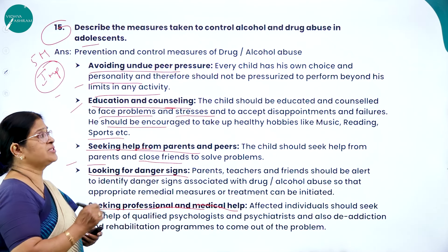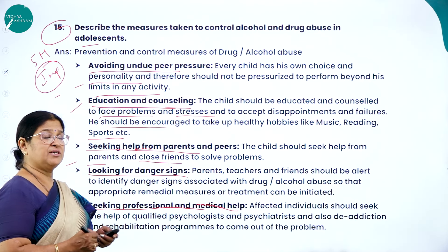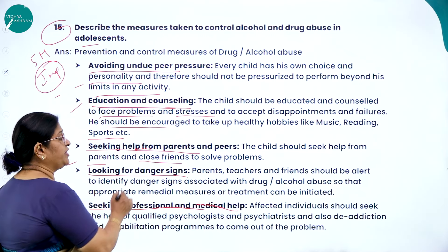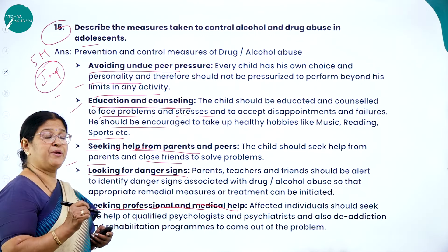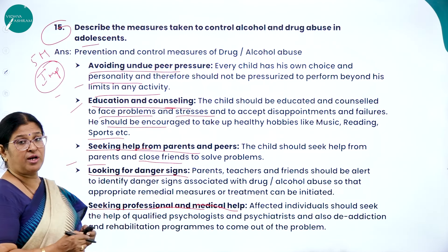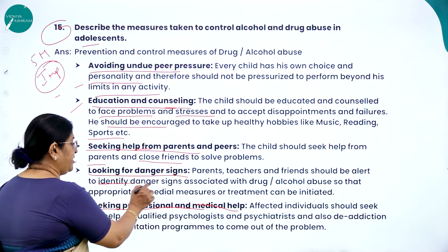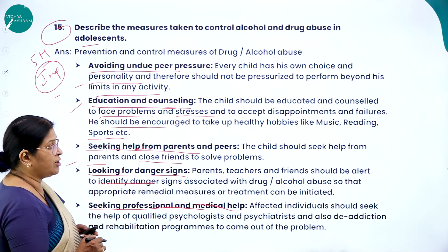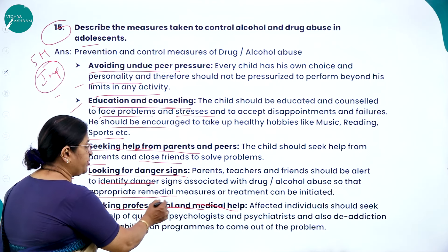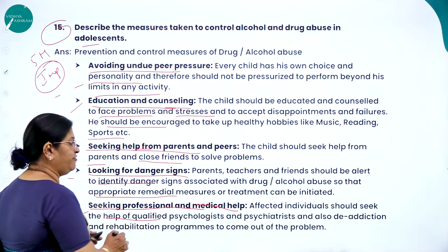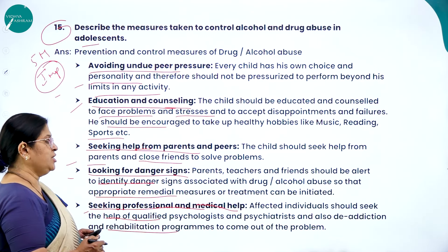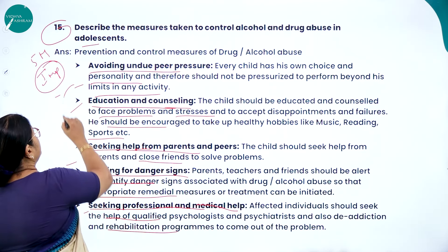Looking for danger signs: any child addicted to alcohol or drugs will show certain symptoms that need to be identified. Parents and teachers are the best people to identify danger signs of addiction; they should be alert to identify danger signs associated with drug and alcohol abuse so appropriate remedial measures or treatment can be initiated. Seeking professional and medical help: affected individuals should seek help from qualified psychologists, psychiatrists, and de-addiction and rehabilitation programs.